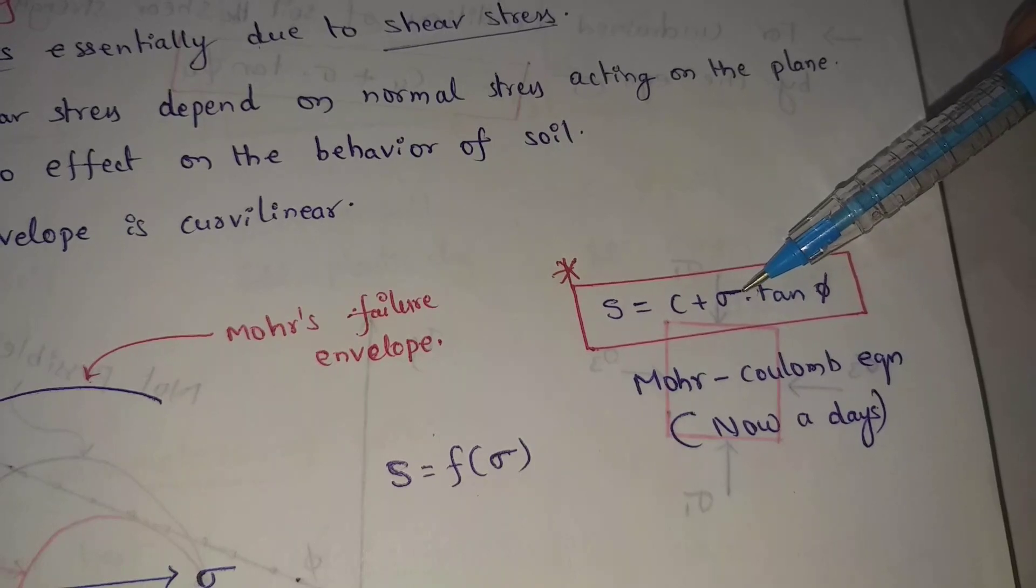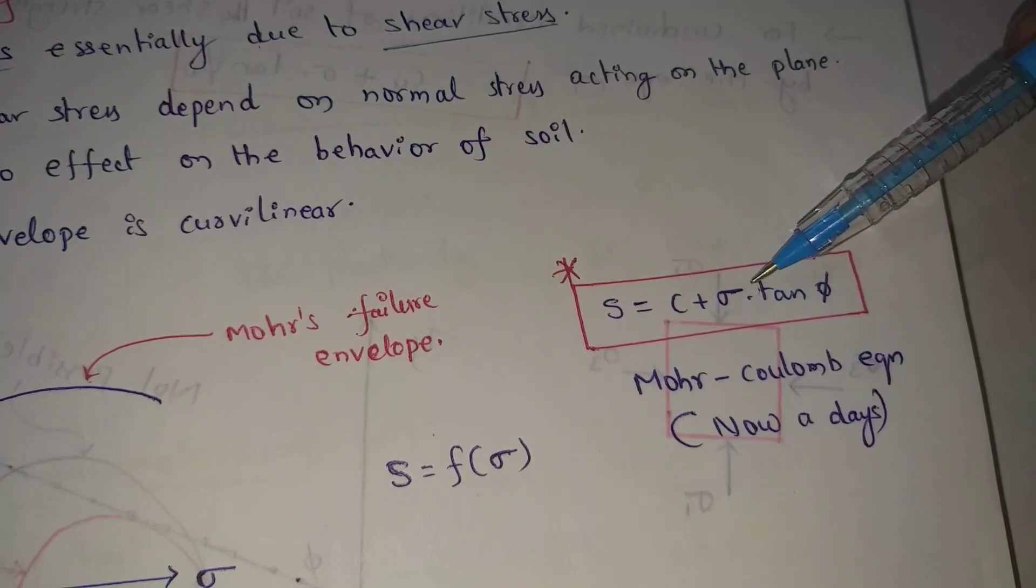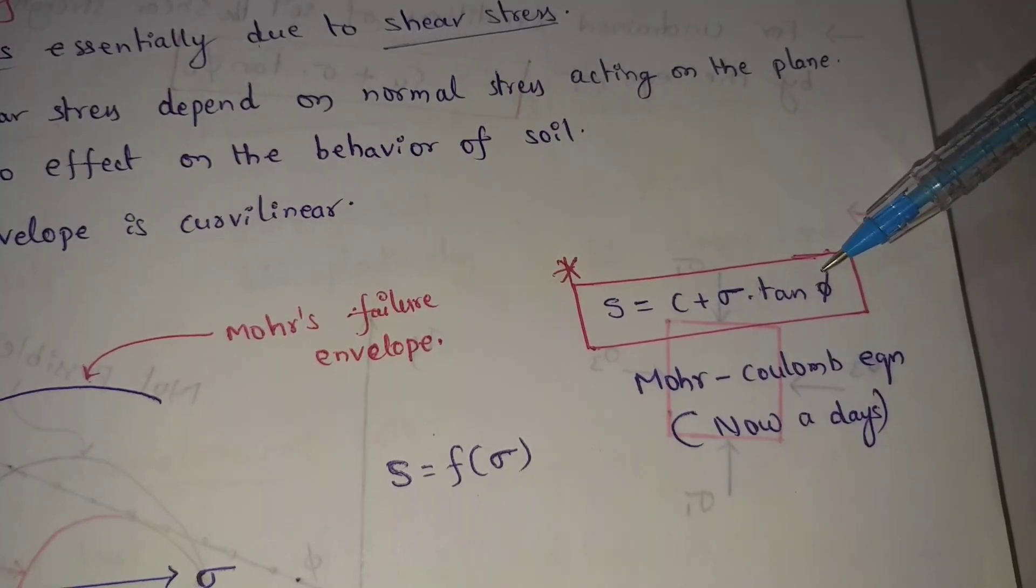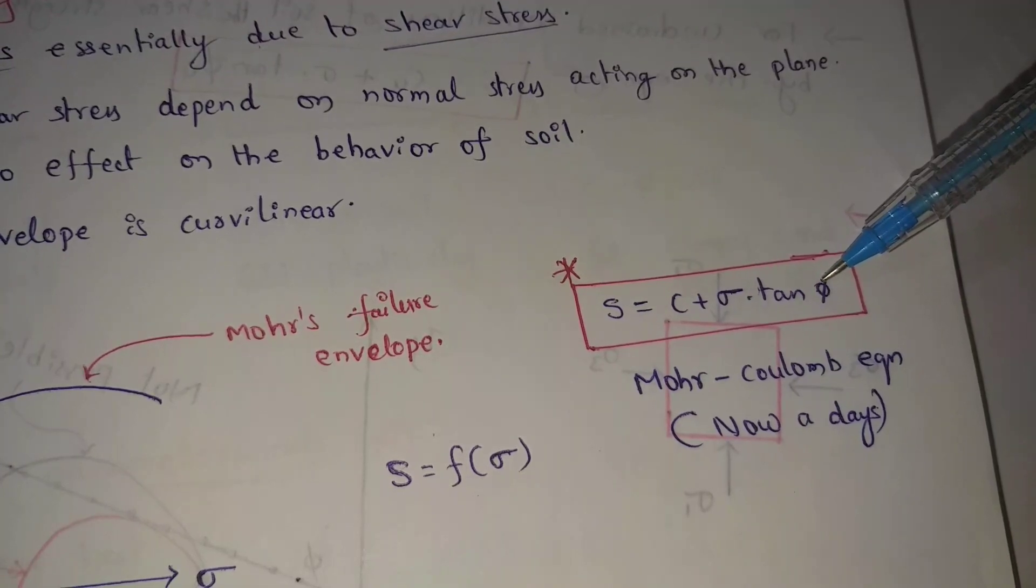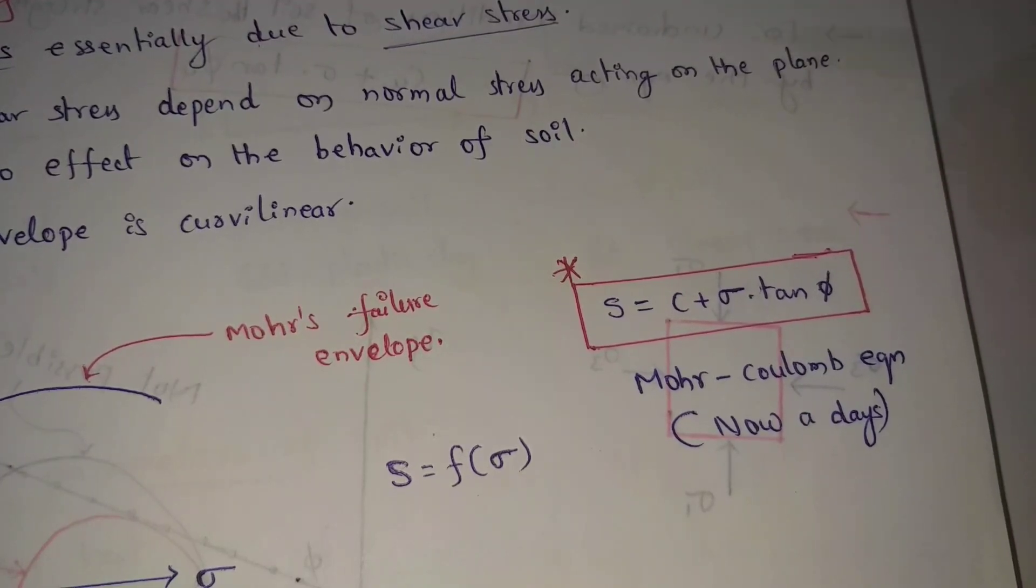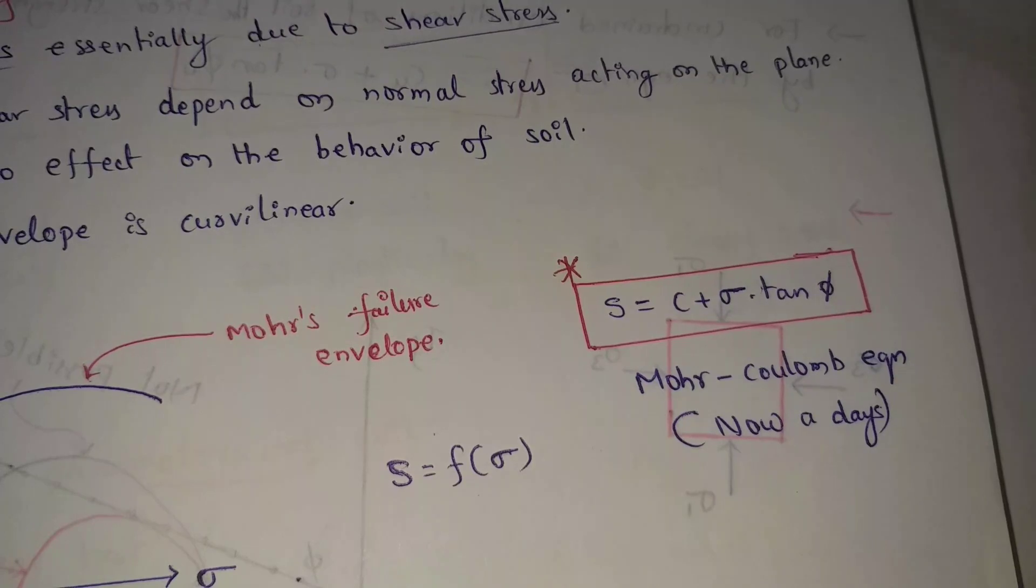Sigma equal to normal stress. Tan phi. Phi equal to angle of internal friction or angle of shearing resistance or slope of failure envelope.